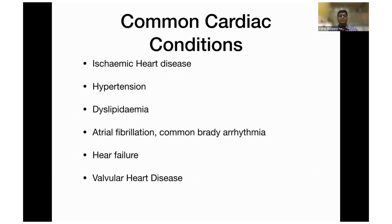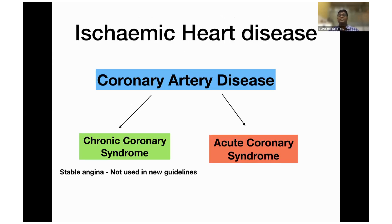The common conditions I would like to discuss are: stroke, ischemic heart disease, hypertension, dyslipidemia, atrial fibrillation, common body arrhythmias, heart failure, and valvular heart disease, especially relating to elderly people. Ischemic heart disease is due to coronary artery disease, which starts even in younger age — maybe as early as fatty streaks in the intima. Intima damage and fat deposition gradually increase and develop into significant atheroma, presenting with various syndromes. Atherosclerotic heart disease can be divided into two categories: chronic coronary syndrome and acute coronary syndrome. Chronic coronary syndrome is a new ESC term replacing the old term 'stable angina.'